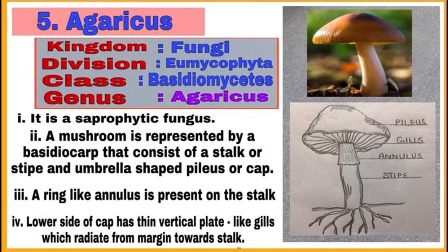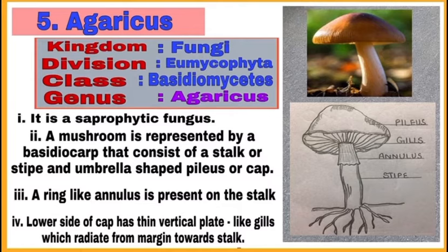Next is agaricus. It is also a fungus. Write the classification, draw a labeled diagram as shown, and write important features. First, it is a saprophytic fungus. Second, a mushroom is represented by a basidiocarp that consists of a stalk or stipe, an umbrella-shaped pileus or cap, and a ring-like annulus present on the stalk. See the lower side of the cap or pileus — it has thin vertical plate-like gills which radiate from the margin towards the stalk.